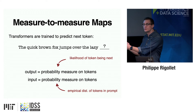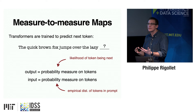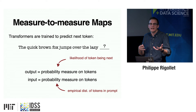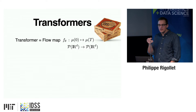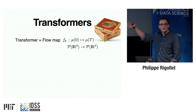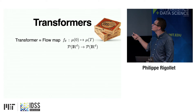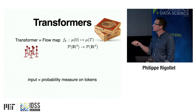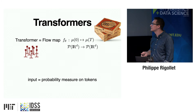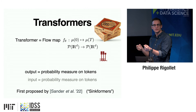Just like in ResNets, I can model this map — from probability measures on tokens to probability measures on tokens — as a flow map. Neural networks are very flexible models of functions from one abstract space 𝒳 to the same abstract space, as long as I can move continuously. So transformers are parameterized flow maps — with billions of parameters that OpenAI trains — mapping an initial distribution to a final distribution. The space P(ℝᵈ) is the space of probability distributions on ℝᵈ.